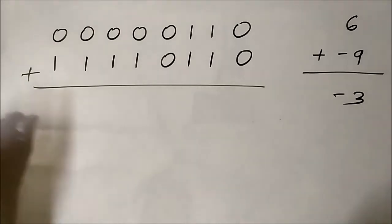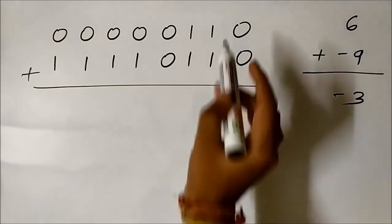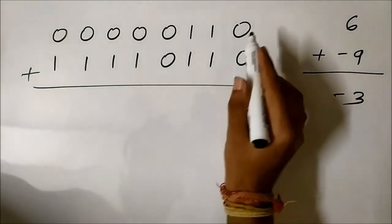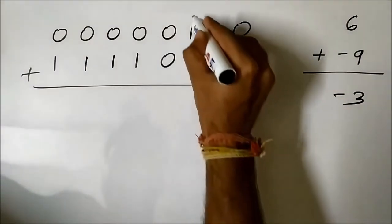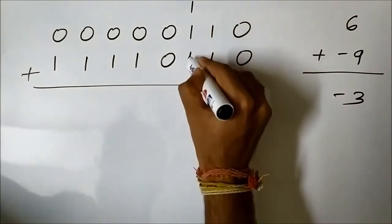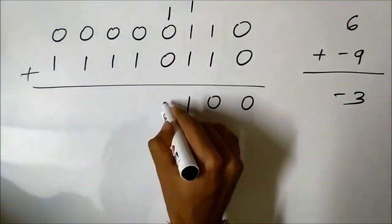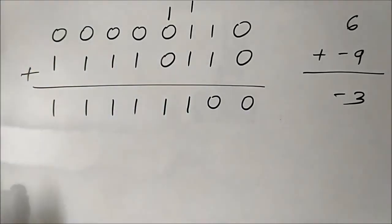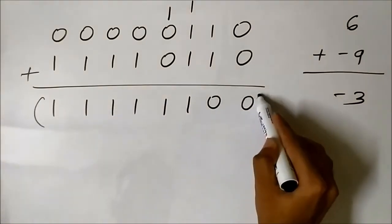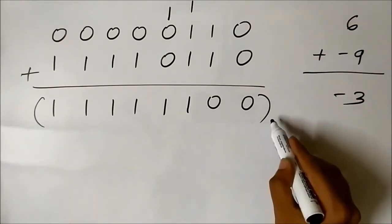Performing the addition of plus 6 and minus 9 (in 1s complement): working through the bit positions — 0 plus 0 is 0, 1 plus 1 is 0 with carry of 1, and so on — we get the result. In this case there is no final carry generated. The result is in 1s complement form: 1 1 1 1 1 1 0 1.